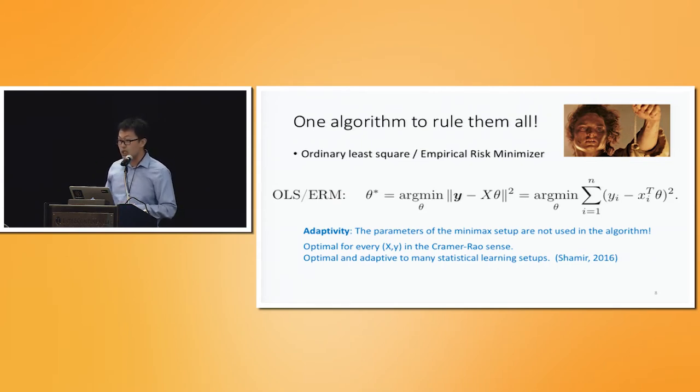So the main question that we consider in this paper is, can we achieve something similar for differentially private linear regression? Can we have an adaptive differentially private linear regression? Adaptive to the data?